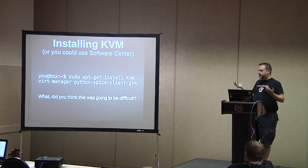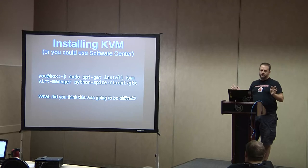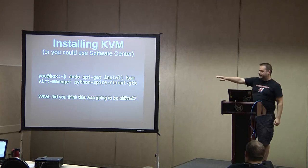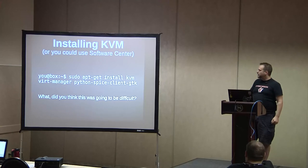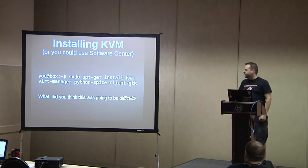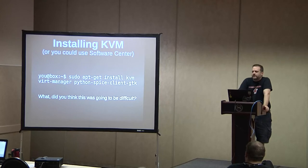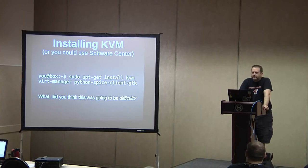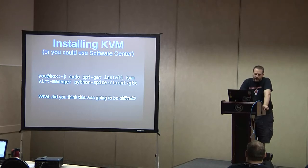If you actually want to install KVM, you could use the software center, but that's not really the way I normally live. I'm going to assume Ubuntu for most of this — I'm an Ubuntu guy. It's going to be pretty similar in any distro. If you're a Red Hat or CentOS type, basically just replace apt-get with yum and it's pretty much the same thing. On Ubuntu: apt-get install kvm virt-manager — and the last one is optional — python-spice-client-gtk. If you want to try to use Spice to control your guests instead of VNC, you need that one. That is the one note you should probably take right now because there's not a real good pointer to the one magical package you actually need to install to get it to work.